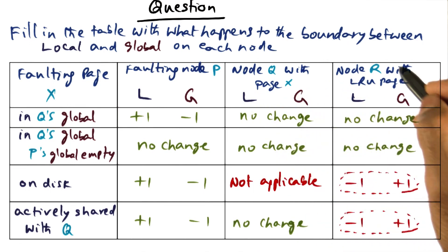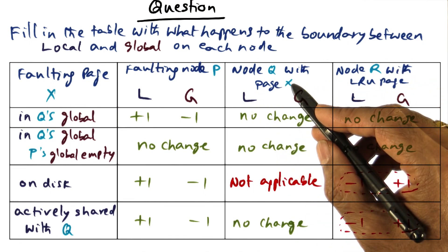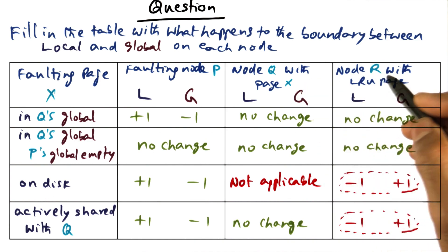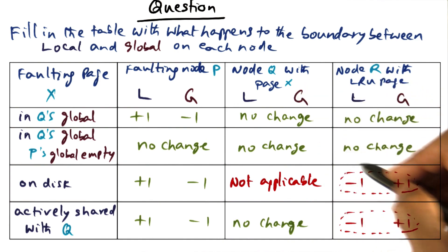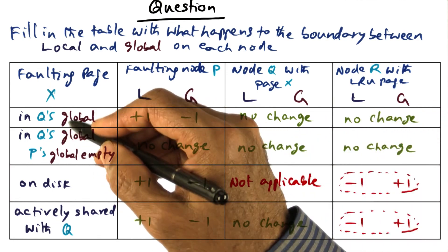And in both cases, there's no change to the balance between L and G on both the node Q, which is supplying the page X, and the node R that happens to have the LRU page because it is not even part of the action in terms of the page fault handling for these two cases.